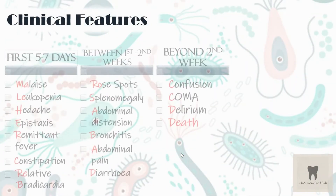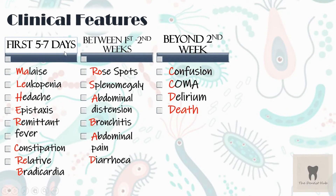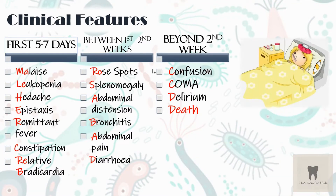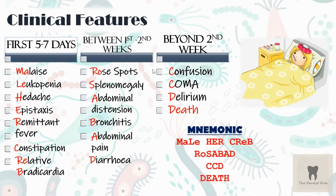The clinical features of typhoid are studied under various headings: the first seven days, between the first and second weeks, and beyond the second week. Here's a mnemonic story to help remember these features. There once lived three best friends — Krebs, Rose, and Lily. Rose lived in Rosabad. One day Lily came to know that Rose was suffering from severe typhoid, so she asked Krebs to mail her that they were coming to Rosabad — remember: mail, Krebs, and Rosabad. After the second week, all three friends met at CCT (Cafe Coffee Day). Note that severe symptoms can lead to death.